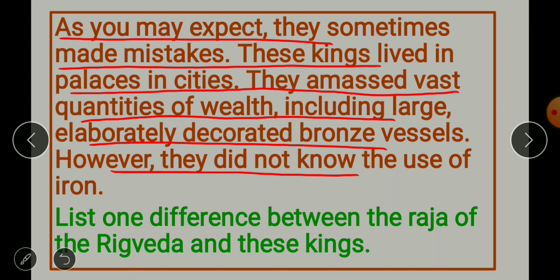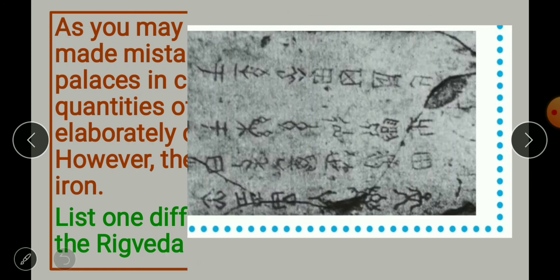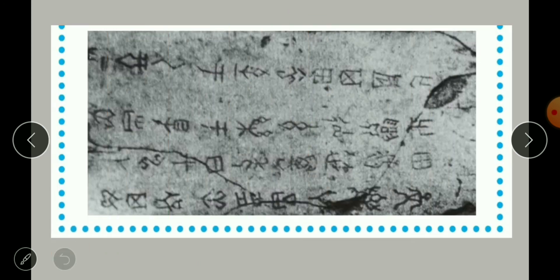The kings of Inamgaon did not know the use of iron either. List one difference between the raja of the Rigveda and these kings. Here you can see a picture of Chinese writing as shown in your book.